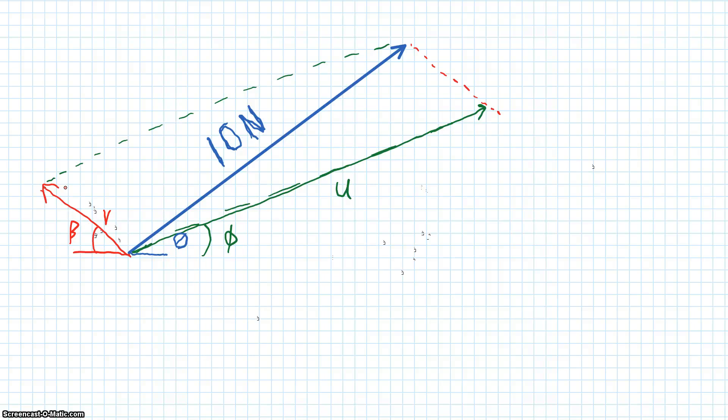Now we have a parallelogram that we can use to do all the trigonometry we need to find the vectors u and v which are the components of this 10 newton force along these arbitrary axes.